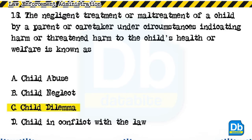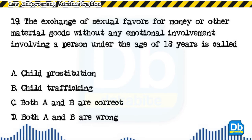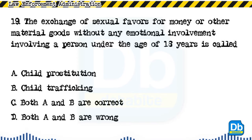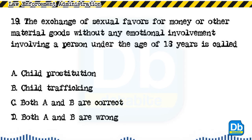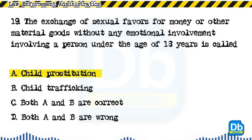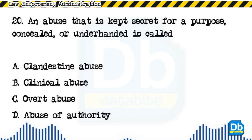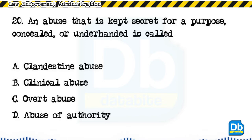Question 19: The exchange of sexual favors for money or other material goods without any emotional involvement, involving a person under the age of 18 years, is called: a) child prostitution, b) child trafficking, c) both A and B are correct, d) both A and B are wrong. The answer is A, child prostitution. Question 20: An abuse that is kept secret for a purpose, concealed or underhanded, is called: a) clandestine abuse, b) clinical abuse, c) overt abuse, d) abuse of authority.